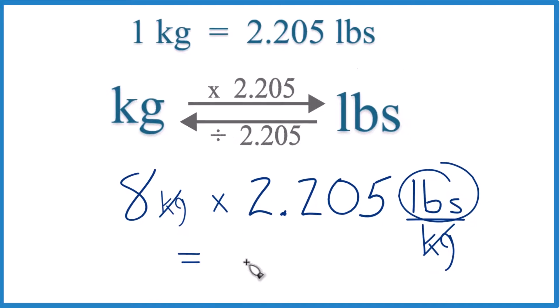We end up with 17.64. And the units, we were going to pounds. Pounds is all that's left. So 17.64 pounds. That's how you convert eight kilograms to pounds. This is Dr. B. Thanks for watching.